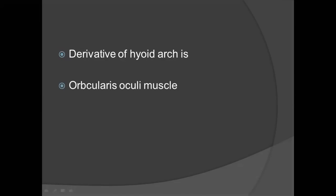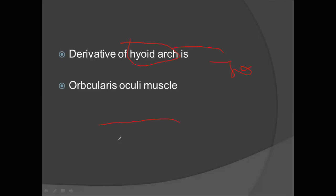Derivative of the hyoid arch — pharyngeal arch derivatives are very important and everything can be asked. You should know them well for both SCQs and MCQs. For the hyoid arch MCQ, you need to identify which muscle is a facial muscle from the options. Orbicularis oculi was one option — orbicularis oculi is a facial muscle, so facial muscle was the answer. If you know the names of facial muscles, you can identify them. Muscle derived from the third pharyngeal arch is stylopharhyngeus only, and its nerve supply is the glossopharyngeal nerve.